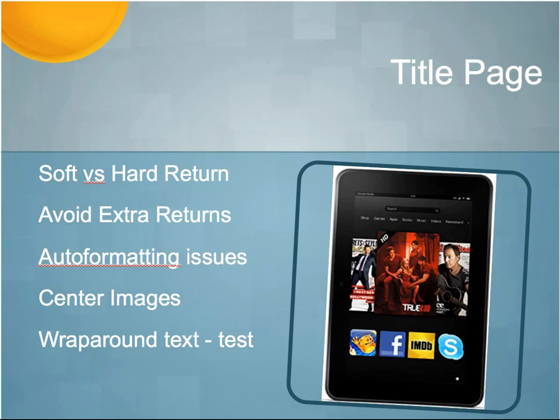Wrap-around text — images with text wrapped around the sides — is important to test. Kindle uses reflowable text, meaning text will wrap around automatically depending on the orientation, size of the page, or device. For example, in portrait view the text flows and breaks in a format predetermined by Kindle's code. If the device is rotated 90 degrees to landscape, that creates a completely different feel to the formatting. Don't try to guess where Kindle is going to break your text — you'll often be wrong. Just make sure to test when wrapping text around images to see how it actually looks.